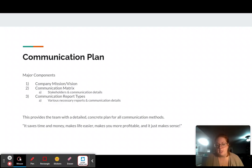And then lastly, the communication report types. This is going to list all the report types, the updates, the deliverables, status reports, anything that you might need to communicate throughout the project. It's going to list the reports, how you communicate, and who you communicate those to. This provides the team with a detailed, concrete plan for all communication methods. It saves time and money, makes life easier, makes you profitable, and it just makes sense.